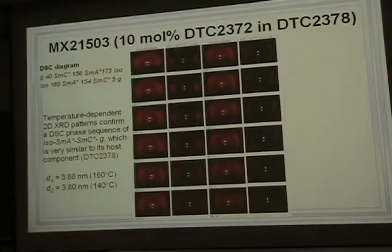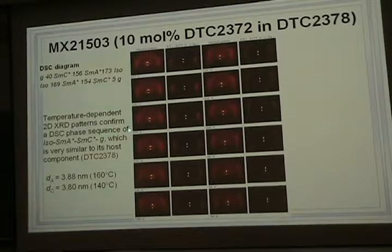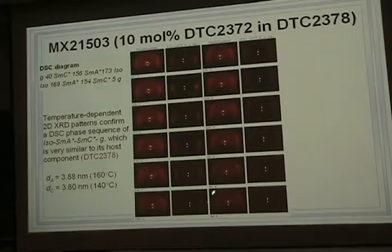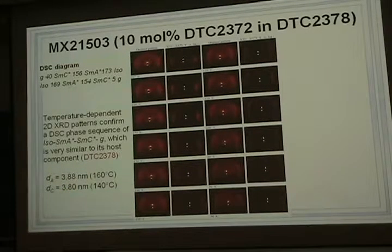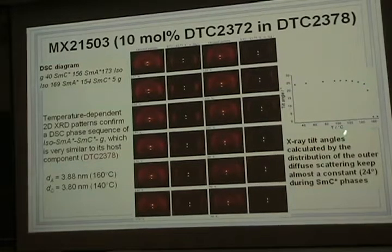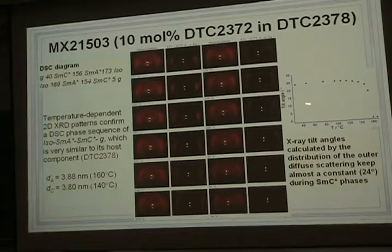Then we are going to do the SHG measurements. We are going to use 10% of this chromophore diamond-like material in the smectic C* host material. We also characterized the phase sequence of this mixture. As expected, it is almost identical to the pure smectic C* host material. Here are the fan-pair depleted 2D X-ray patterns, which confirm the DSC phase sequence of isotropic, smectic C*, smectic C* glass. The layer spacings for smectic A and smectic C* phases are calculated. It is interesting to note that the X-ray tilt angle is almost constant at about 24 degrees during the smectic C* phase.